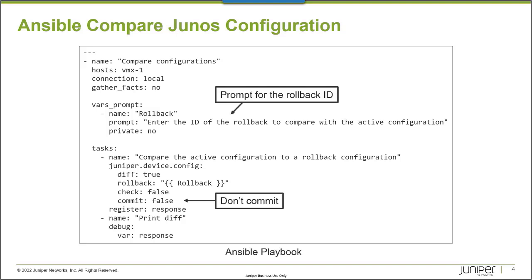The user will be prompted and can enter whatever rollback ID they want. The task uses the Juniper.device.config module, which supports performing a diff operation. Whatever the active configuration is, we perform a diff between it and the rollback ID the user specified. You need to be careful, because by default when this diff operation is performed, the rollback is loaded as a candidate configuration, it is checked, and it is also committed. So I'm setting don't check and don't commit — that's very important.